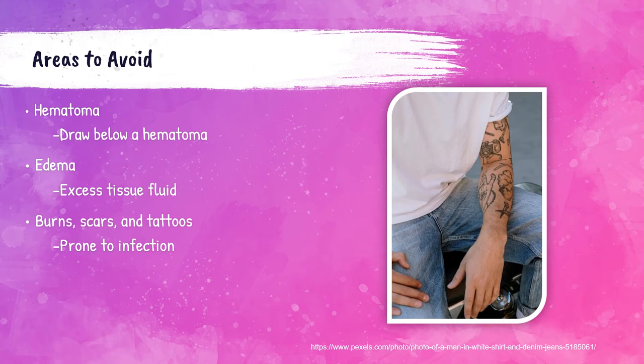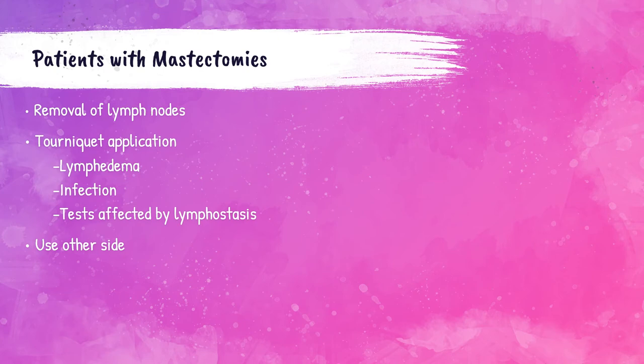Because patients with mastectomies have their lymph nodes removed — mastectomy is a removal of the breast tissue, but lymph nodes are also removed — applying the tourniquet can cause the patient to develop lymphedema or an infection. Lymphedema is swelling due to the buildup of lymph fluid. The sample could also be affected by lymphostasis, where the tissue becomes swollen due to a blockage in the flow of lymph fluid. Phlebotomists must use the other arm in patients that have had mastectomies.